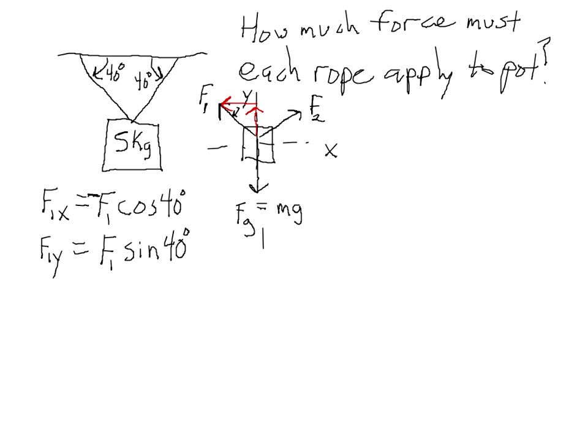We found the x and y components of F1. Let's find the x and y components of F2. The x component is this vector, and the y component is this vector. Once again, the x component is adjacent to the 40 degree angle, so we have F2x equals F2 cosine 40.